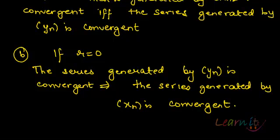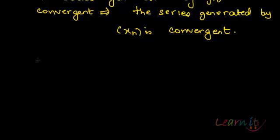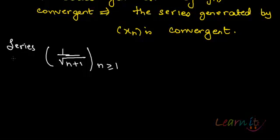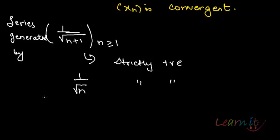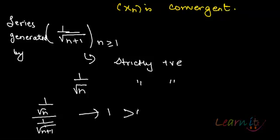For example, let us look at the series generated by 1 upon root(n+1). This is a strictly positive sequence, and similarly 1 upon root n is also strictly positive. Now let us look at the ratio: 1/√n divided by 1/√(n+1). This ratio tends to 1, which is greater than 0.